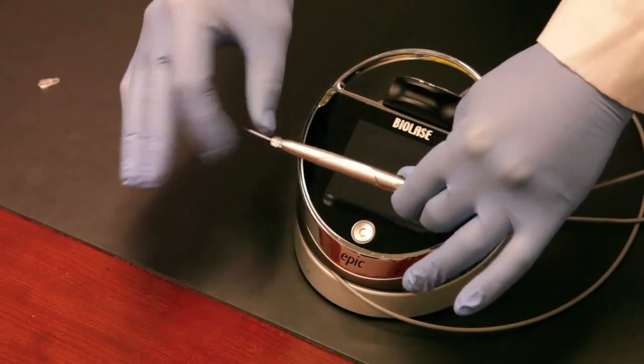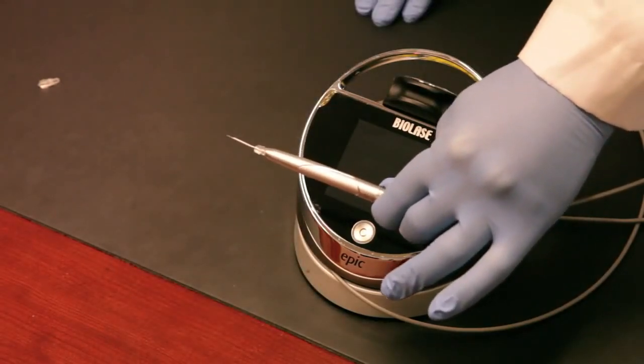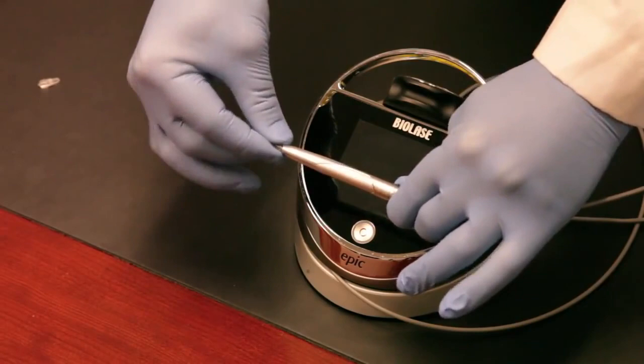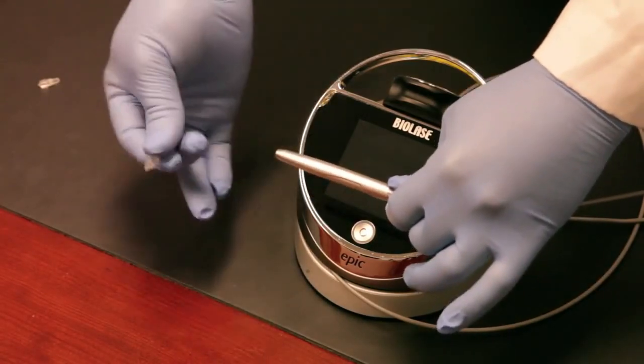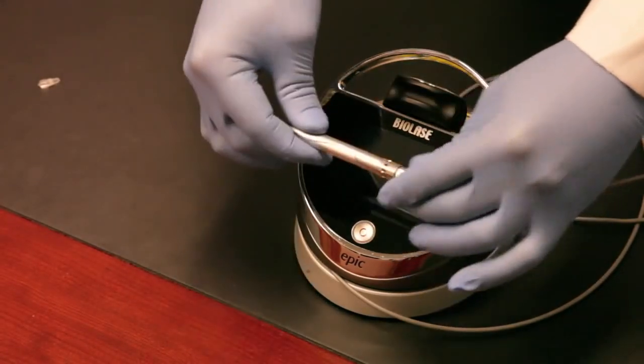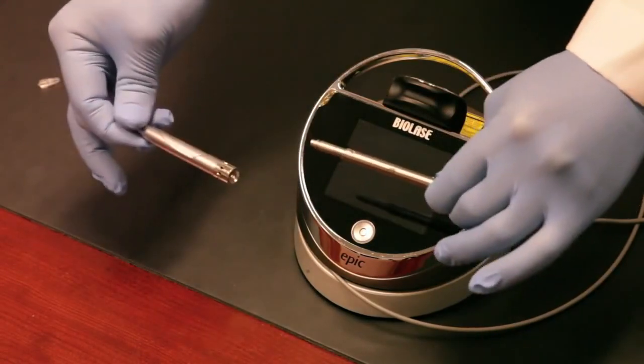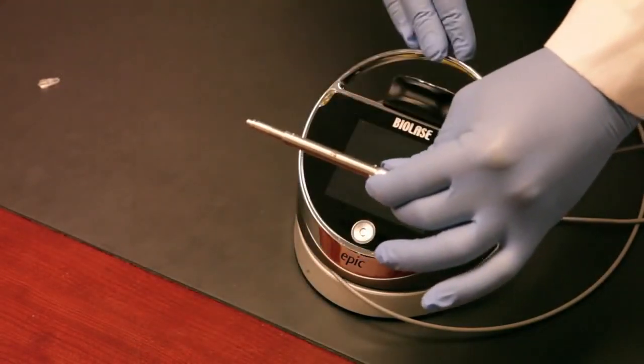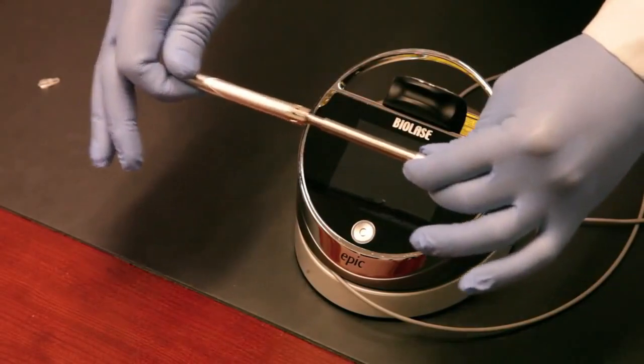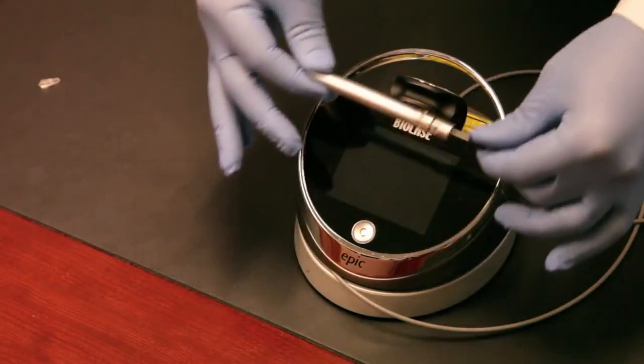Now, again, you can bend this if you need to get to some of those difficult to reach posterior areas, but when you're done, after you've used the tip, you'll go ahead and unscrew it, throw it in the sharps container, and that's it. This comes off, your assistant would put this in the autoclave, wipe this down, take the removable plastic cover off, wipe the laser down, and that's your tear down. Really, really basic and easy to understand.